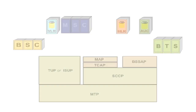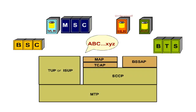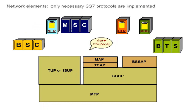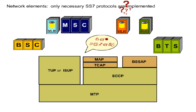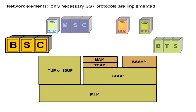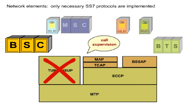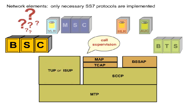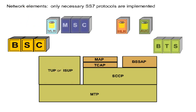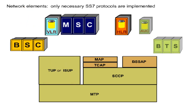Not every GSM element must be able to understand every language. Consequently, only those protocol layers which the network element actually requires for carrying out its task need to be implemented. A BSC, for example, will never need the TUP protocol because call supervision, which this layer supports, is not its task. In the following lessons, the SS7 requirements of the individual GSM elements will be introduced.